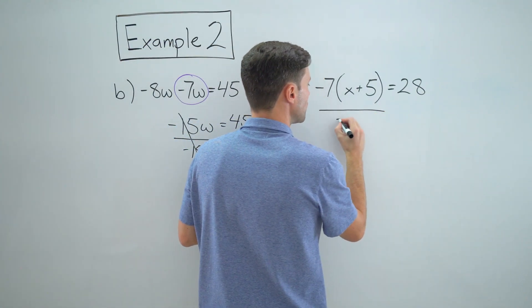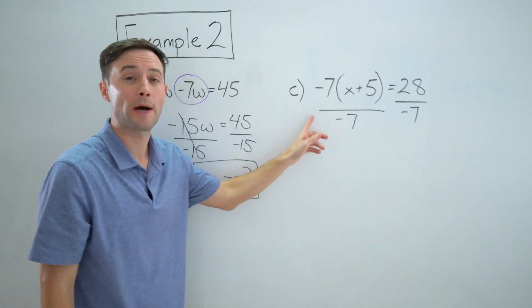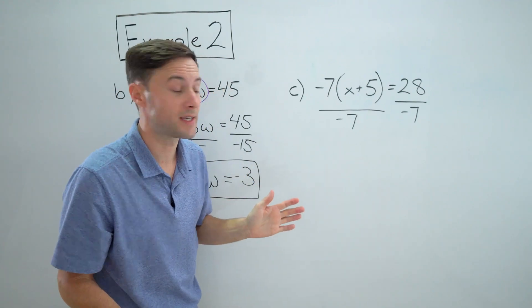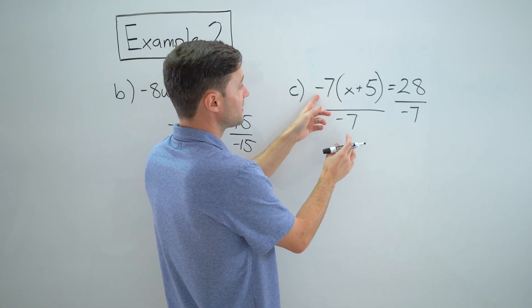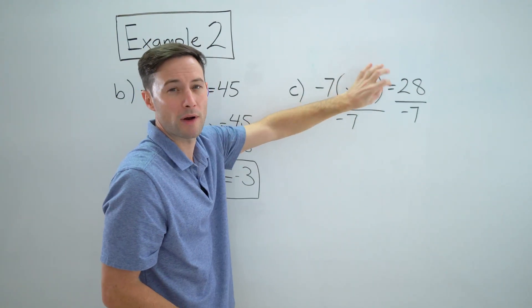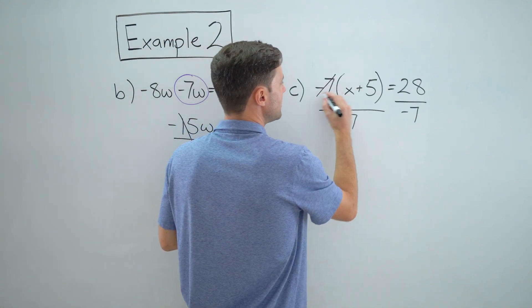Now notice how I wrote it. I'm dividing the entire side by negative seven, right? But the good news is, is that this negative seven, anything could be in that parentheses and we could do the exact same thing. So what happens is these simplify and I'm just left with x plus five.